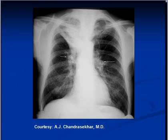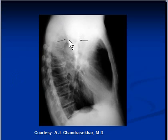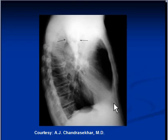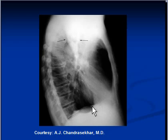On the lateral view, you can see the V shape. This is the horizontal fissure and this is the oblique fissure, which should normally be positioned further back. The right hemidiaphragm is a bit higher than the left hemidiaphragm. This is the left hemidiaphragm because the cardiac shadow is continuous with it.